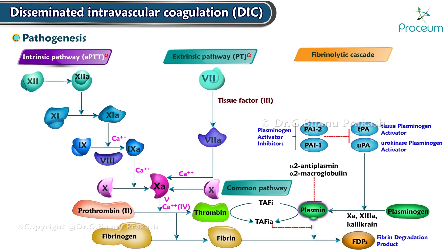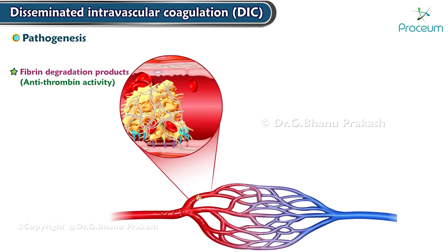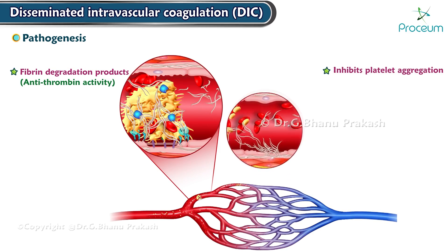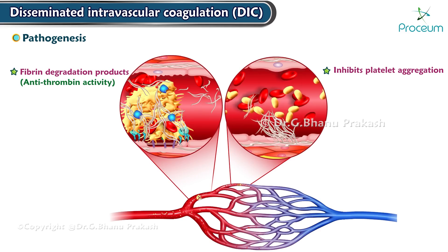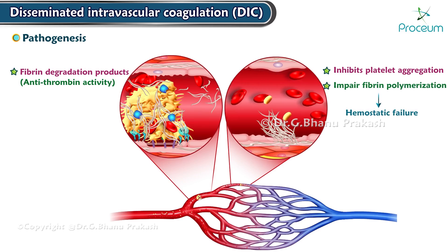Plasmin cleaves the fibrin, factors 5 and 8, thus reducing their concentration further. Fibrinolysis also creates fibrin degradation products having antithrombin activity, which inhibits platelet aggregation as well as impairs fibrin polymerization. This results in hemostatic failure.